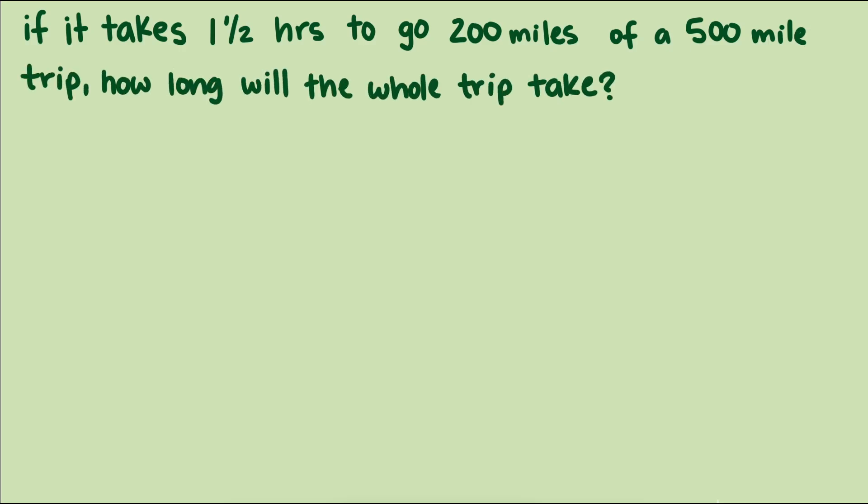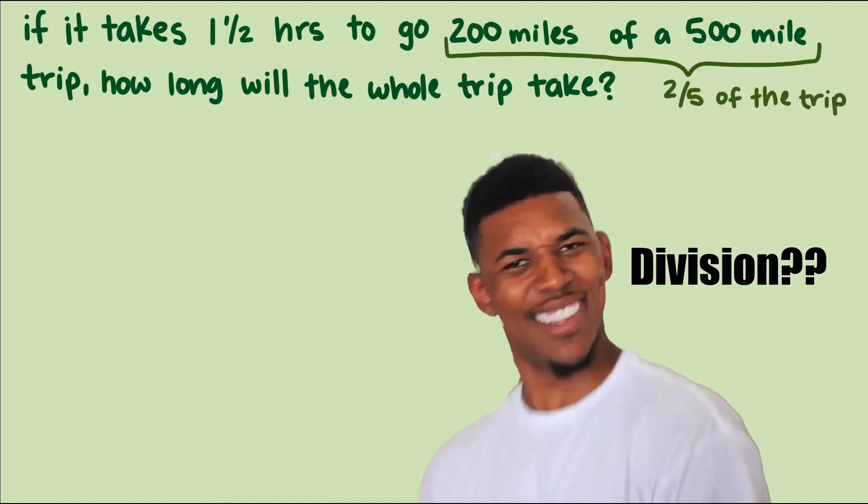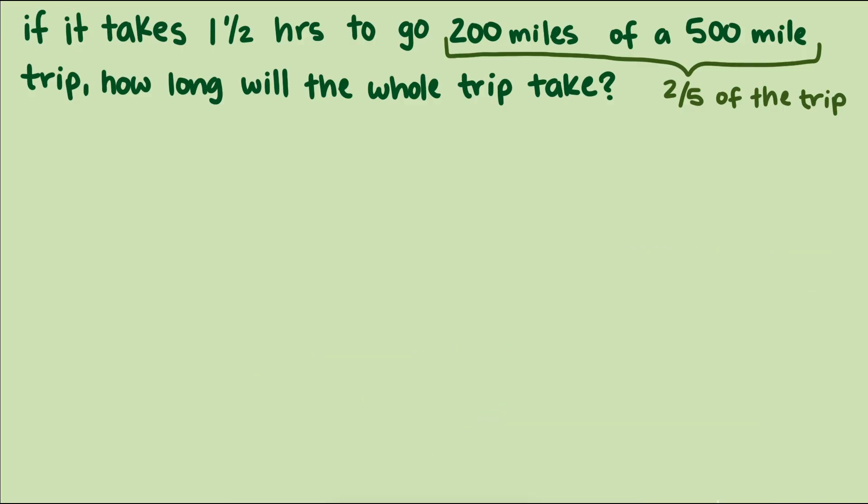Or restated, we've traveled one and a half hours to complete two-fifths of a trip. How long will the entire trip take? Many students might see a problem like this and not even recognize that it is a division problem if they aren't familiar with the type of division needed to solve it. So which type of division will lend itself more easily here?